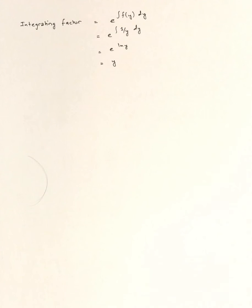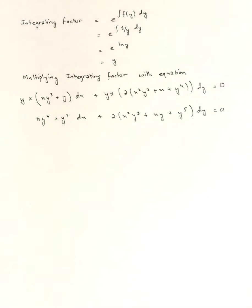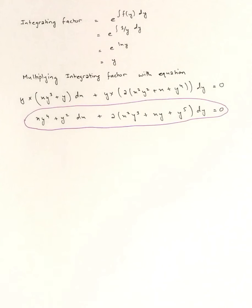The integrating factor is the factor missing from the equation that prevents it from being solved by the exact method. Multiplying the entire equation by the integrating factor y gives the new equation: (xy⁴ + y²) dx + 2(x²y³ + xy + y⁵) dy = 0. This equation is now reduced to be solved by the exact method.